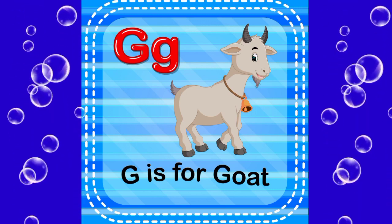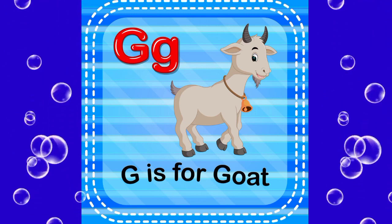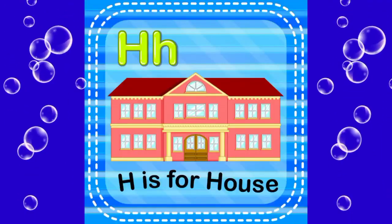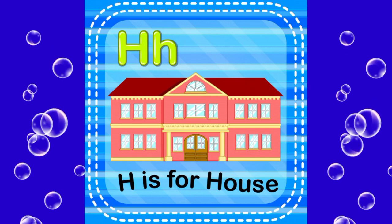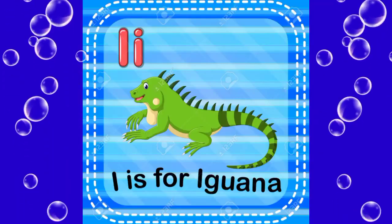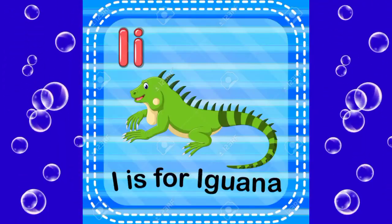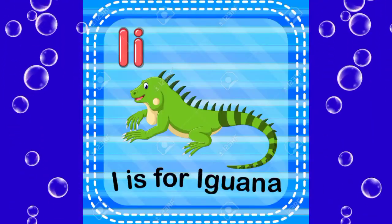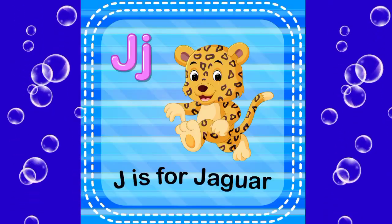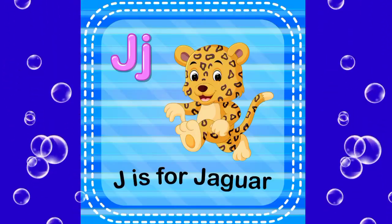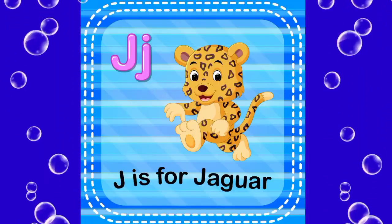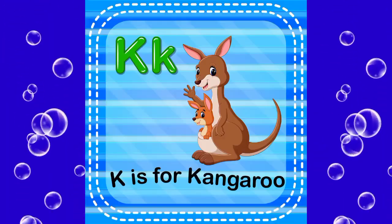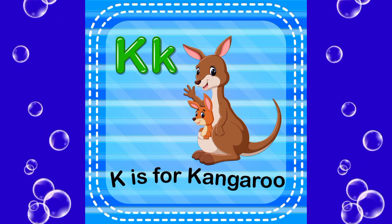D is for goat, S is for house, I is for iguana, J is for jaguar.